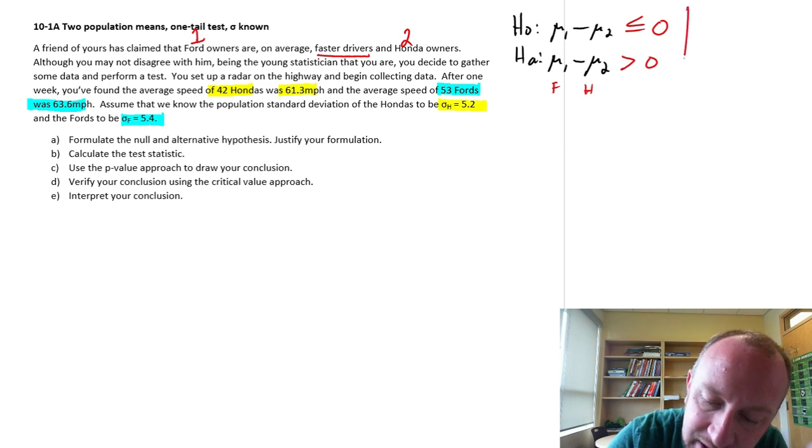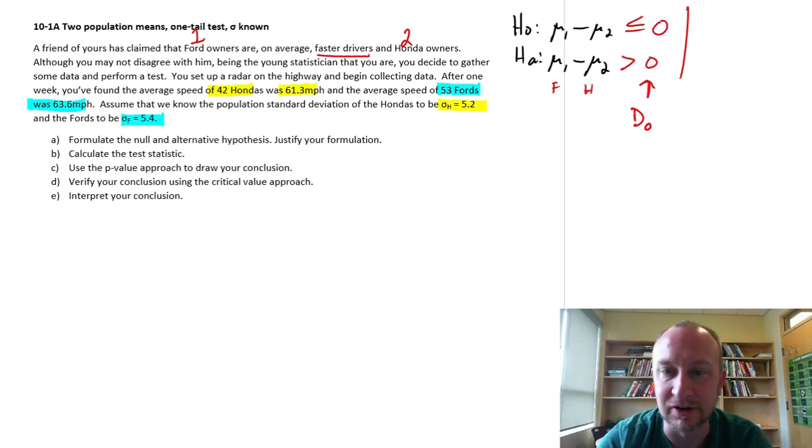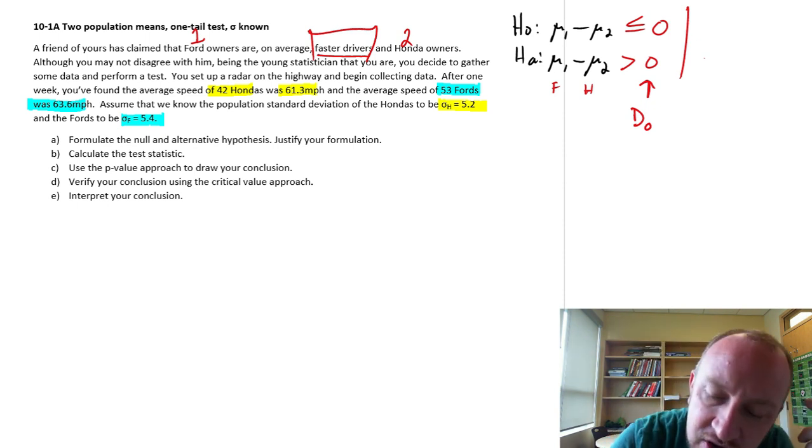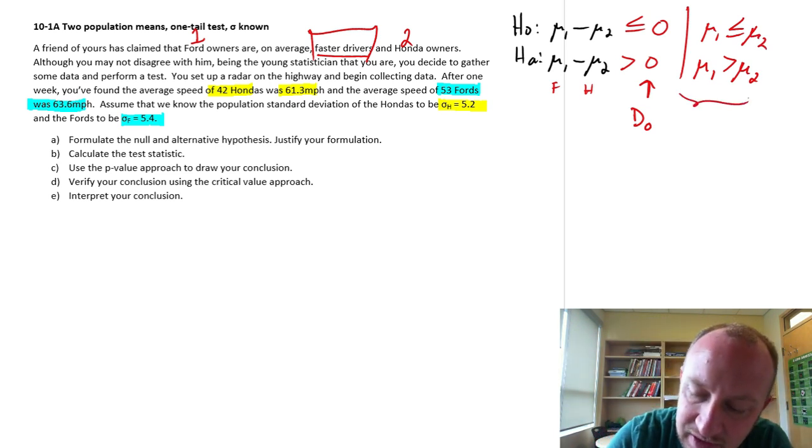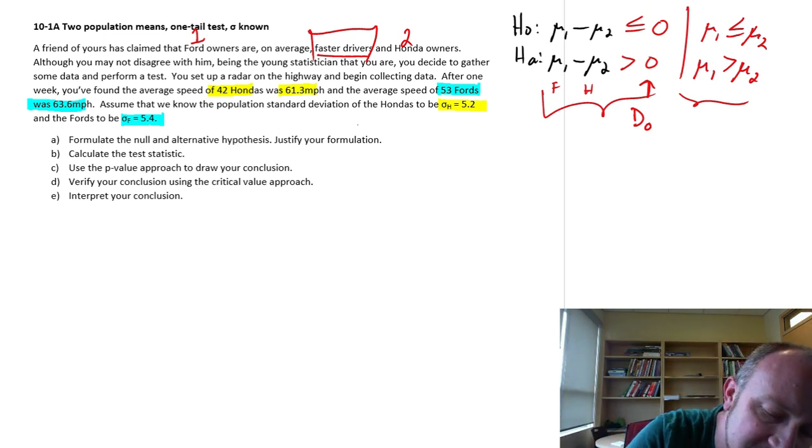Now another way that we can formulate this here, this is this hypothesized difference, sometimes the generic notation is D sub zero. I can test for any hypothesized difference, are the Ford owners five miles an hour faster than the Honda, ten miles an hour faster than the Honda, whatever. In this case, I'm just checking to see that they are faster drivers. So just is it greater than zero or not? So given that that hypothesized difference is simply zero, I can just rewrite this like this. And sometimes I find this is maybe a little bit easier to read this notation rather than this. But either one, they're perfectly the same. So whichever one you're comfortable with.